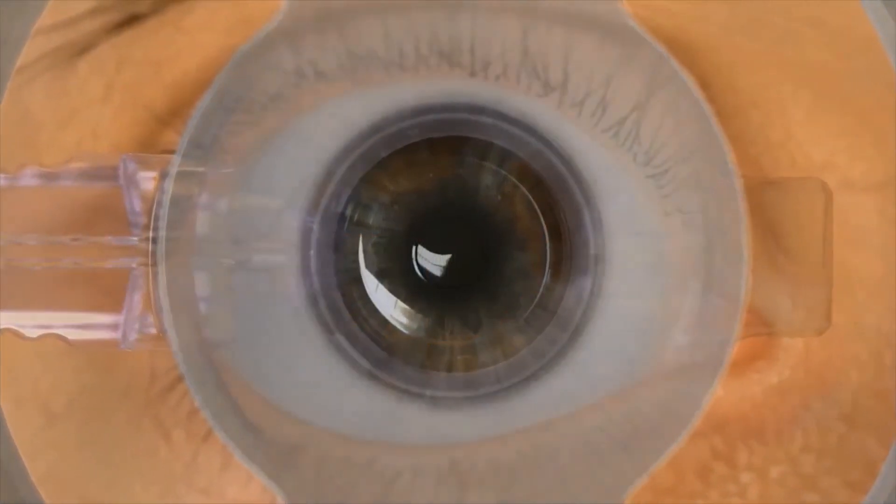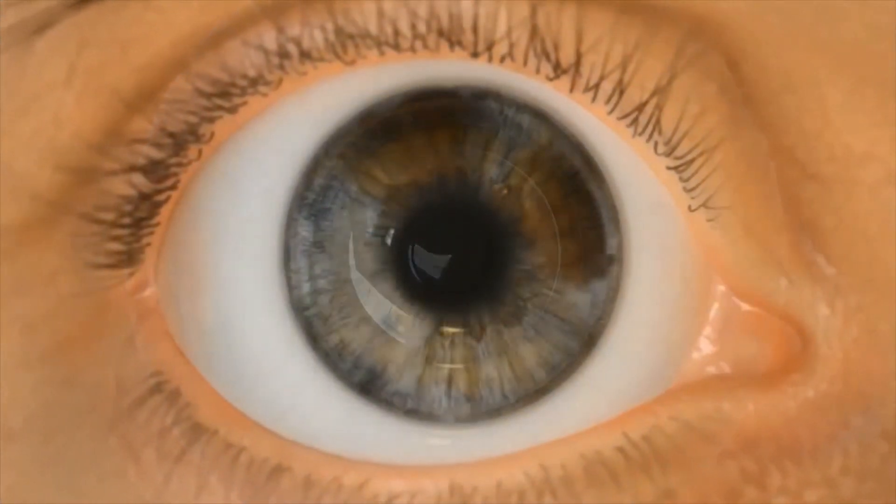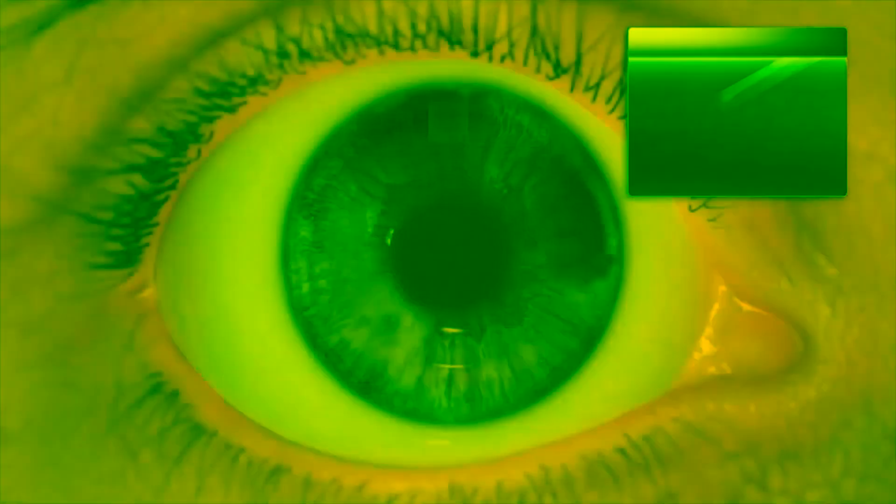The flap is created by first forming a tunnel to avoid an opaque bubble layer, or OBL. The tunnel provides a path for the release of the gas and water generated in the flap creation process.